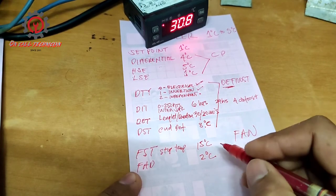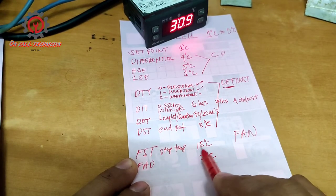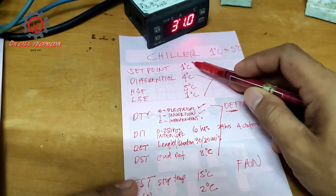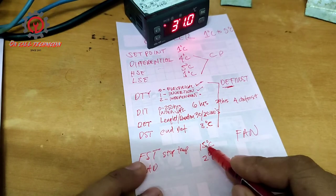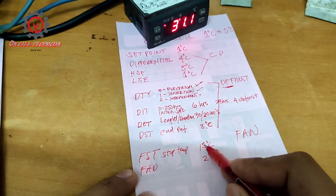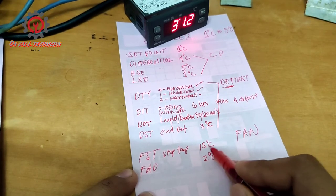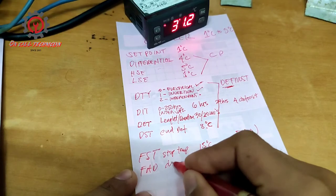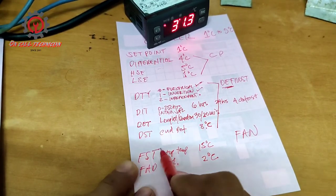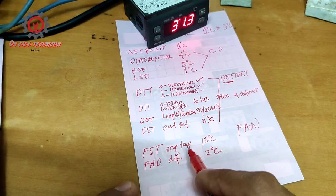The fan folder also has a differential, FAD. I'm going to put two degrees Celsius here. This means the fan stops when it reaches 15 degrees Celsius, and once the compressor starts pumping again and the temperature drops to 13 degrees Celsius — because 15 minus 2 is 13 — the differential is satisfied and the fan motor will run again. That is the purpose of the fan differential.